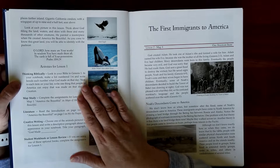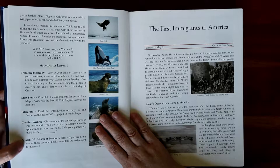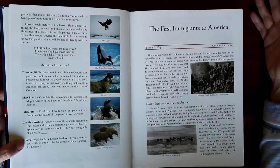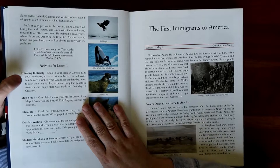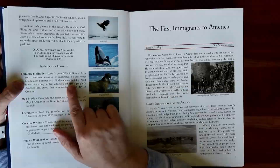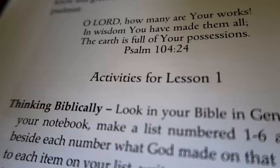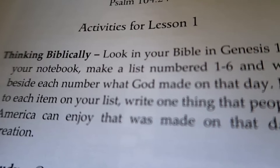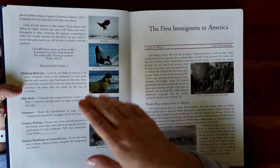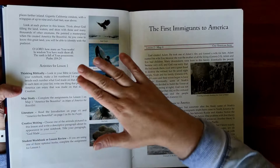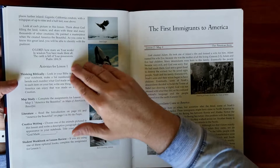The sections for the activities are: thinking biblically, map study, literature, creative writing, and student workbook or lesson review, depending on the age of your child and which book you purchased. Thinking Biblically is going to give them a verse to look up. This one says, look in your Bible in Genesis 1, make a list numbered 1 through 6, write beside each number what God made on that day, and next to each item write one thing that people in America can enjoy that was made on that day of creation. So if you don't already do another Bible curriculum, this is a great way to incorporate a daily devotional for your children.